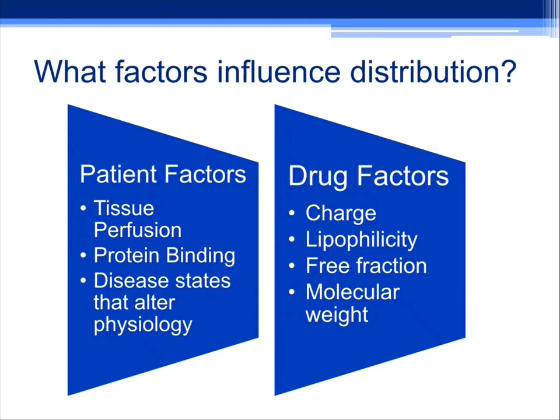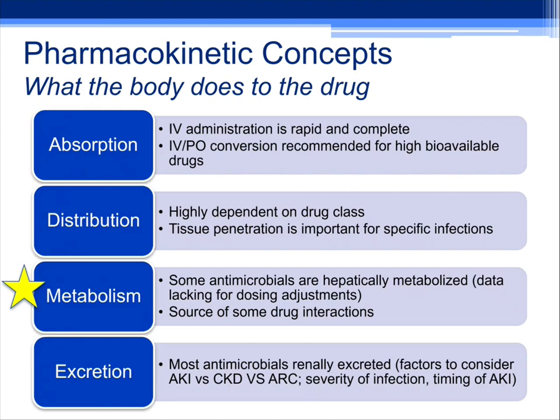There are factors that influence distribution from both the patient and drug sides. Patient factors include tissue perfusion, protein binding such as albumin level, and disease states like peripheral vascular disease or CAD where the drug may not reach target concentrations. Drug factors include the charge of the molecule, whether it is lipophilic versus hydrophilic, its free fraction, and molecular weight — which matters especially for blood-brain barrier penetration.